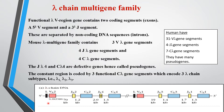These functional C-lambda gene segments encode for the three lambda subtypes: lambda 1, lambda 2, and lambda 3. In the figure we can see the leader sequence, the V-lambda variable region, the J-lambda, and the C-lambda region. We have C-lambda 1, C-lambda 2, C-lambda 4 and corresponding J-lambda segments - J-lambda 2, J-lambda 3, J-lambda 4. The J-lambda 4 and C-lambda 4 are the pseudo ones, represented as non-functional and of no use.